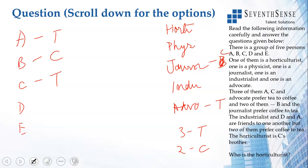this prefers coffee. Now, Industrialist, D and A are friends, but two of them prefer coffee to tea. A is already prefering tea. We know that from here. So D also prefers coffee. Industrialist prefers coffee.